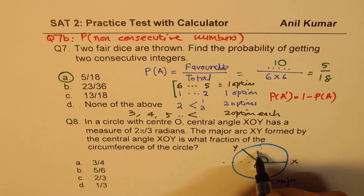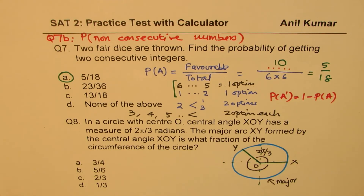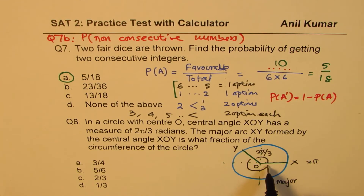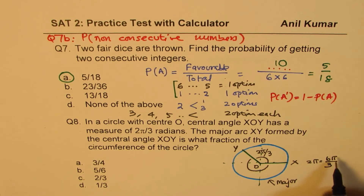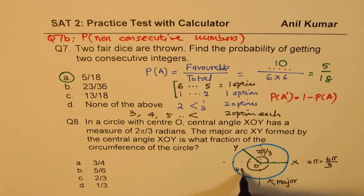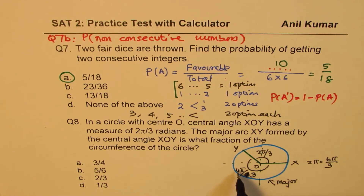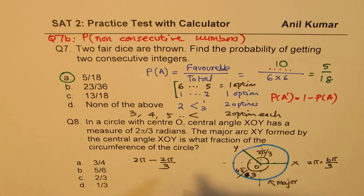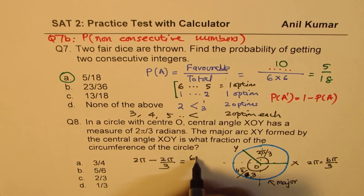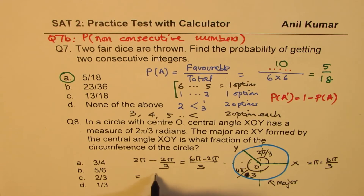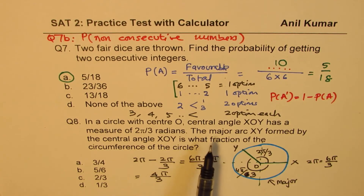The total angle around the circle is 2π. So the major arc angle equals 2π minus 2π/3. Converting: 2π equals 6π/3, so 6π/3 minus 2π/3 equals 4π/3. That is the central angle corresponding to the major arc.